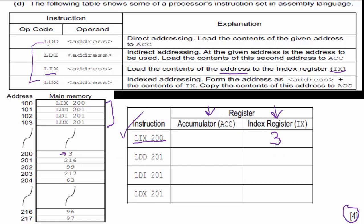Next is LDD 201. The description says: load the contents of the given address to the accumulator. Students sometimes ask 'do I load 201?' — no. It says load the contents of address 201. The contents of address 201 are 216, and we load that to the accumulator. So I write 216 — another point for Cambridge.